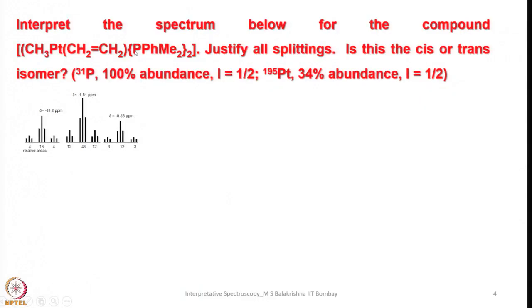Let us look into another interesting example. Interpret the spectrum below for the compound where a methyl group, platinum, ethylene, and two dimethylphenylphosphine ligands are present. Justify all splittings: is this the cis or trans isomer? The data given is: 31P has 100% abundance with I equals half; 195Pt is NMR active with I equals half and 34% abundance; and 196Pt is 66% abundant and NMR inactive with I equals 0. By looking into the spectrum and writing all possible isomers for this compound, we should decide whether it is cis or trans and which NMR this spectrum represents.